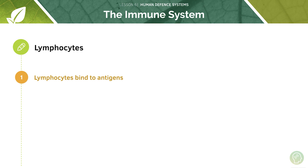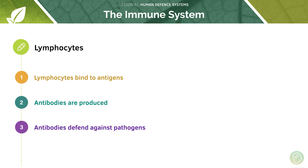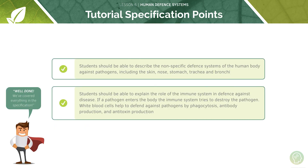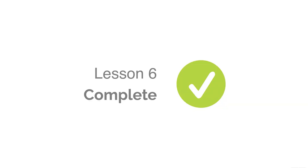Just to recap: lymphocytes, like phagocytes, have to detect the pathogen — lymphocytes do this by binding to antigens on the pathogen's surface. They produce antibodies, and it's these antibodies that defend against pathogens. There are lots of mechanisms we've been through today, so please go back and recap, especially the key points of how phagocytosis occurs and how the antibody response occurs, as these could be four or five mark questions in your exam. That's all for today.